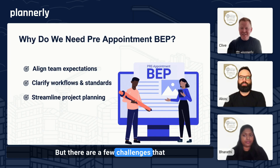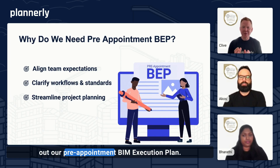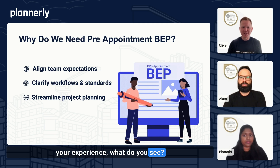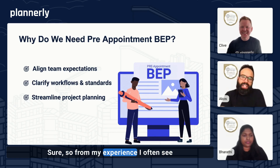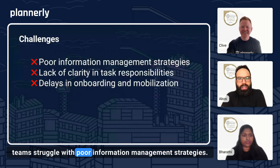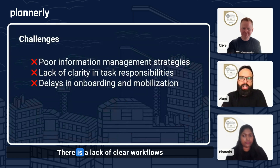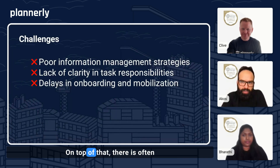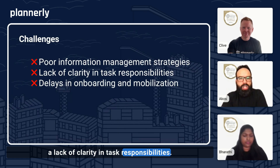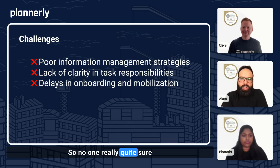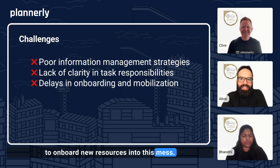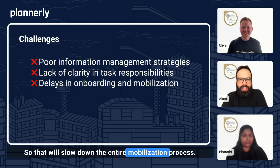There are a few challenges that might be faced when planning out our pre-appointment VIM execution plan. From experience, teams often struggle with poor information management strategies — there is a lack of clear workflows, and data ends up scattered and disorganized. On top of that, there is often a lack of clarity in task responsibilities, so no one is quite sure who is accountable for what. To make things even worse, it is impossible to onboard new resources into this mess, which slows down the entire mobilization process.